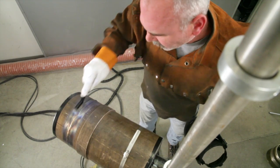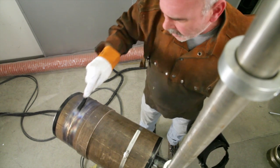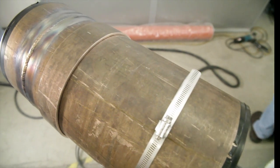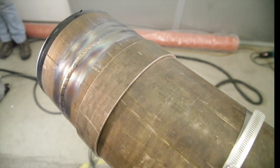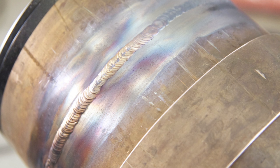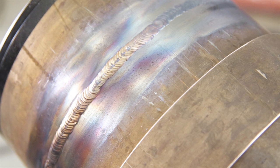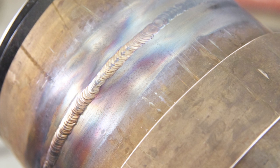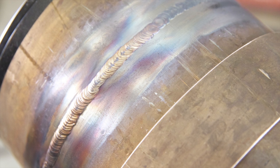After the weld is made, post-weld clean to a bright finish and visually inspect the weld to assure that it meets desired quality, the proper weld contour, and is free of defects such as cracks, undercut, and lack of fusion and penetration. Both the ID root weld, when accessible, and the weld face should be visually inspected.